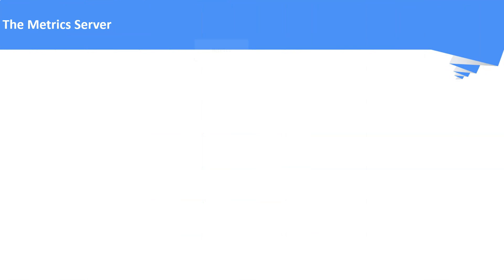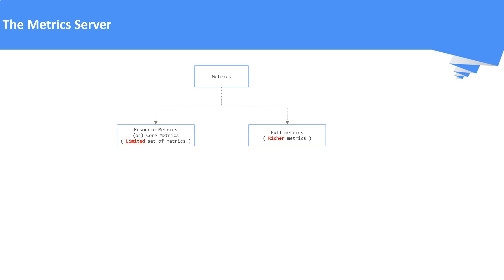The metrics server. Basically, Kubernetes has two metrics pipelines: the resource metric pipeline (or core metric pipeline) and the full metric pipeline. These pipelines are used to collect and aggregate the metrics about the Kubernetes resources. The resource metric pipeline provides a limited set of metrics, especially measurements only with respect to CPU and memory. For this to happen, we need to install a cluster add-on component called metrics server. Horizontal pod autoscaler and vertical pod autoscaler use the data from the metrics server to adjust the workload replicas and resources to meet customer demand.